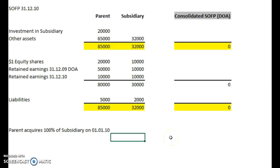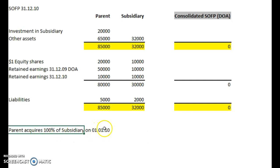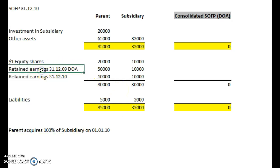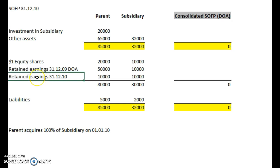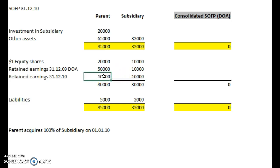This is a second statement of financial position. We're going to consolidate the parent and subsidiary. The parent acquired 100% of the subsidiary on the 1st of January 2010. This is a follow-on from the previous video. We have retained earnings at the date of acquisition, and this is a year on now — we have another year's worth of earnings to the 31st of December 2010. We can see we've earned more for each company since the date of acquisition.